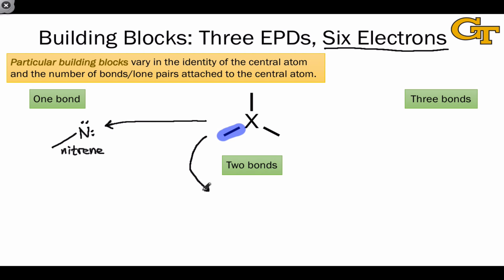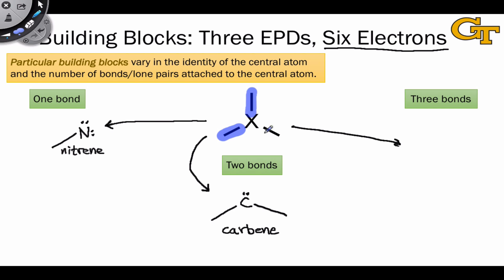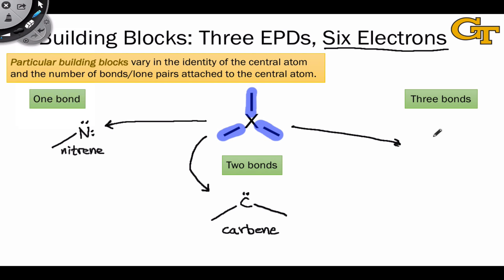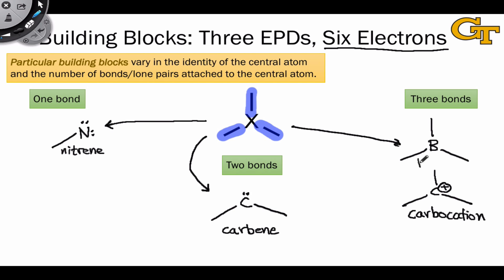Two bonds and one lone pair in this building block corresponds to the interesting intermediate known as a carbene — replacing nitrogen with carbon and one lone pair with a bond to retain a neutral species. What's interesting is that carbon in a carbene is neutral but only has two bonds rather than four. The three-bond case is by far the most common, corresponding to carbocations and boranes. Placing boron at the center of the three-bond building block gives a neutral species since the formal electron count is 3, while replacing boron with carbon gives a formal positive charge — a carbocation.